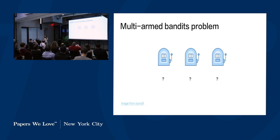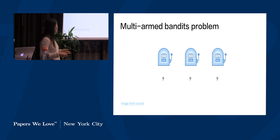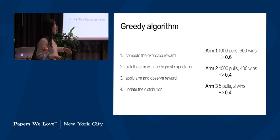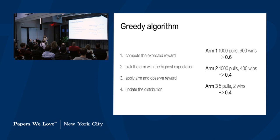The issue is that as the gambler, I don't actually know the mean rewards of each machine. So I need an algorithm for playing the machines to figure out what the mean rewards are. The simplest is the greedy algorithm: you look at your history of arm pulls — say I've pulled arm one 1,000 times, arm two 1,000 times, and arm three five times — and pick the one with the highest observed fraction of wins, then update the counts for the next iteration.